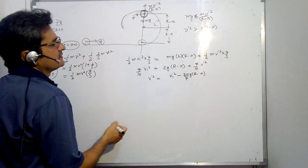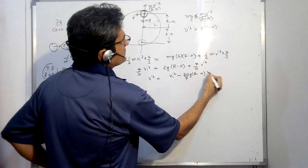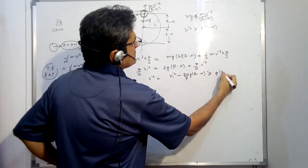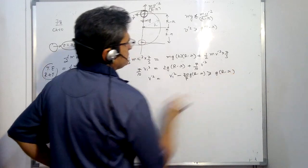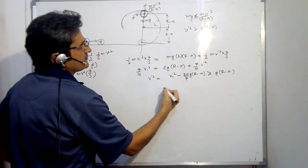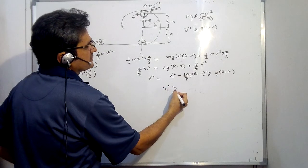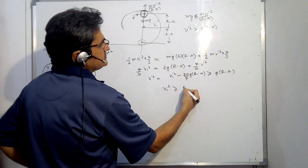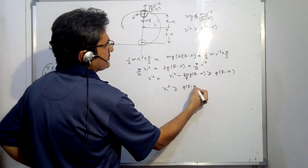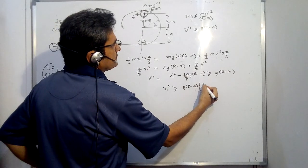This is the value of V' square from this equation. We have multiplied by 10 upon 7 both the sides, is 20 upon 7. And this V' square has to be greater than equal to G(R minus r) from that equation. So solve it further. So V_I square has to be greater than equal to G(R minus r) into 1 plus 20 upon 7.